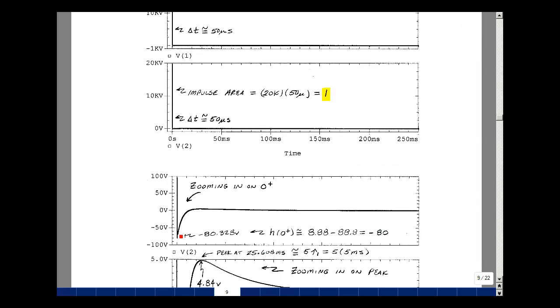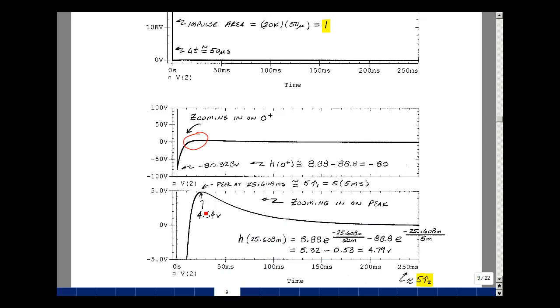Let's zoom in on this part of the curve to see if those exponentials are actually there. Sure enough, I've got a dipping down and something coming back up. At t equals 0 plus, the impulse equals 0, so I just have my exponentials: 8.88 times e to the 0 minus 88.8 times e to the 0, which equals minus 80. Here I'm measuring minus 80.328. They're not identical because we have finite slopes on our impulse. Let's zoom in on this term just below.